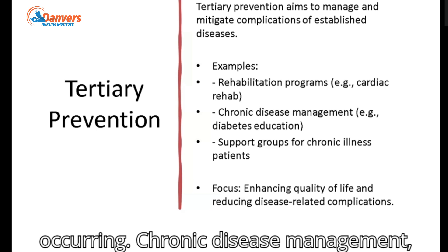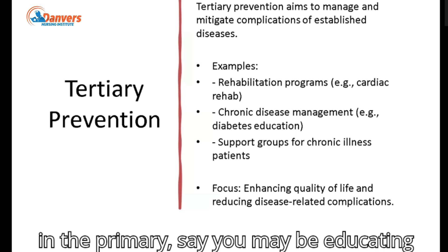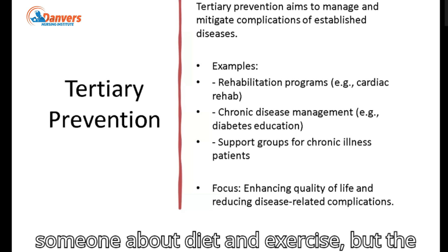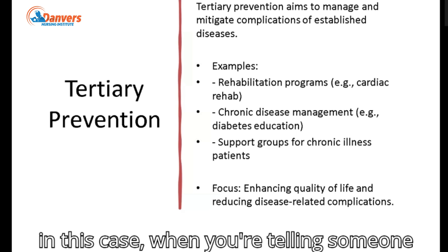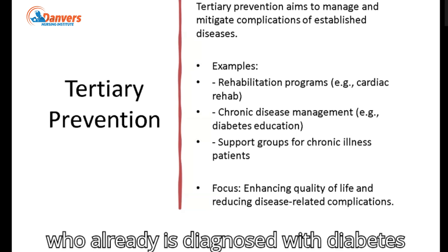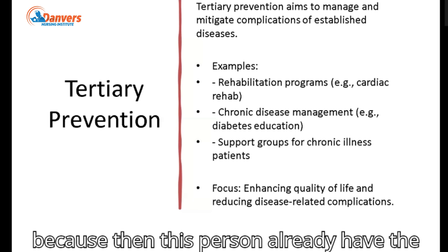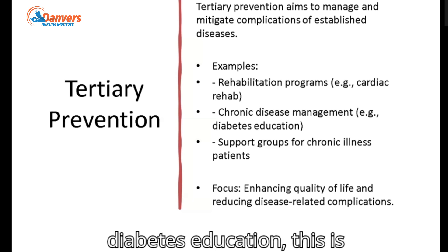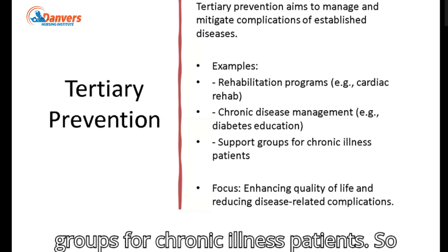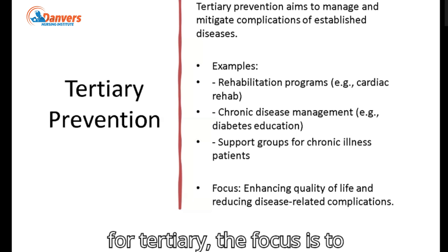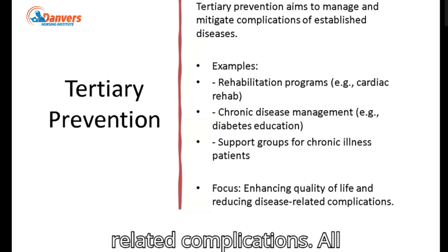Chronic disease management such as diabetes education — remember, earlier in primary prevention you may educate someone about diet and exercise, but the objective is different: to prevent the disease from occurring. But when you're telling someone who is already diagnosed with diabetes about diet and exercise, the objective is different because that person already has the disease. Diabetes education in that case is tertiary. Support groups for chronic illness patients also fall here. The focus of tertiary prevention is to enhance quality of life and reduce disease-related complications.